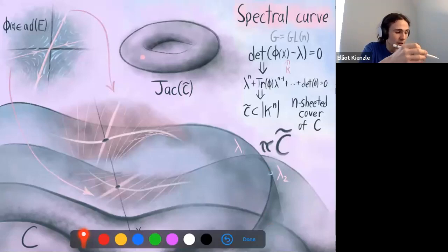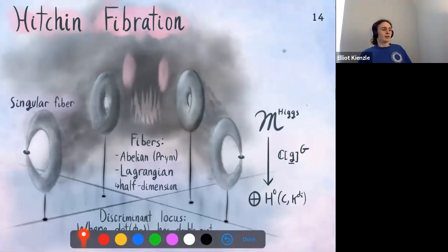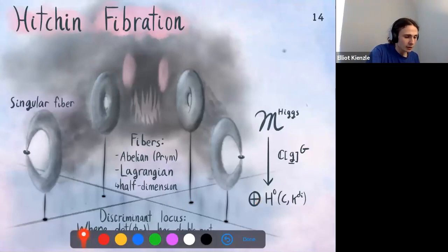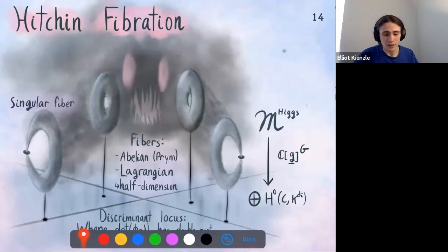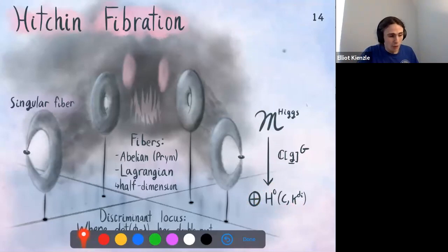How do we generalize this to groups other than GL_N? We get the Hitchin fibration. Each point in the base corresponds to a spectral curve, given by the values of a basis of invariant polynomials of G — the coefficients of the characteristic polynomial. The Hitchin map sends a Higgs bundle to the tuple of invariant polynomials of φ, landing in a space of sections of various powers of the canonical bundle. Over each point in the base we have all the eigenline bundle data, corresponding to an abelian variety — a Jacobian or more generally a Prym variety.